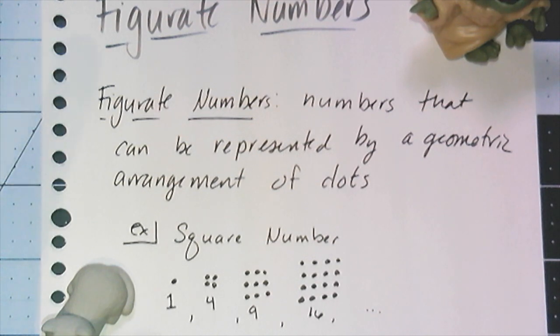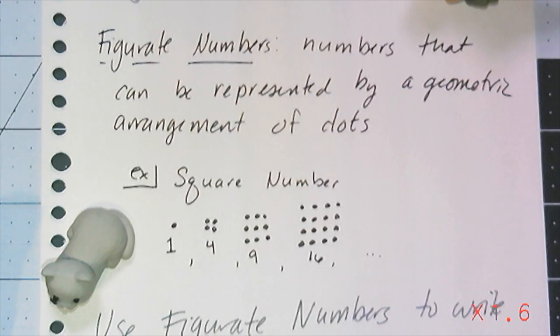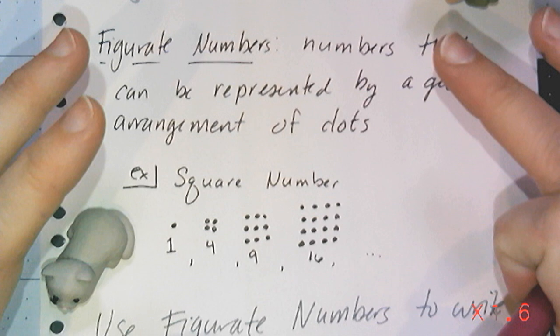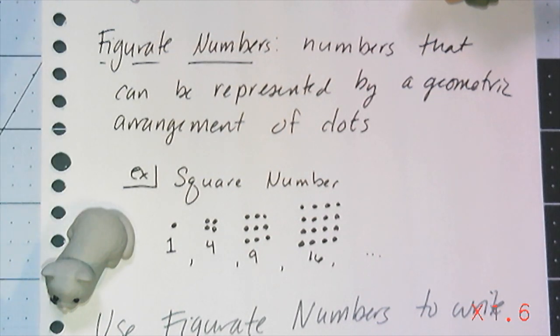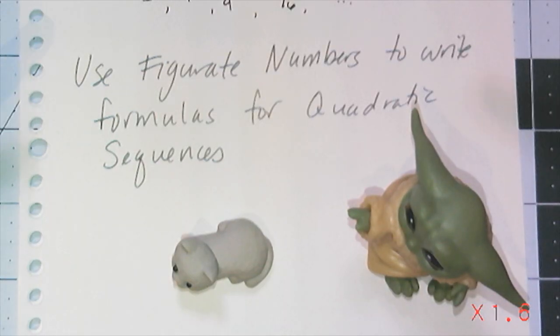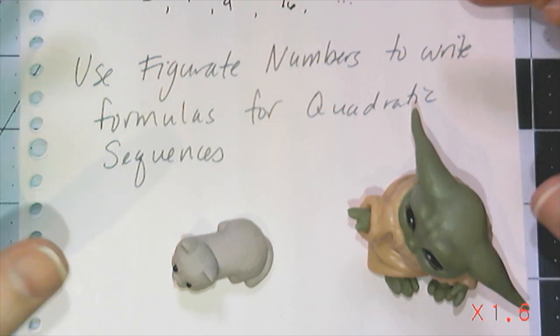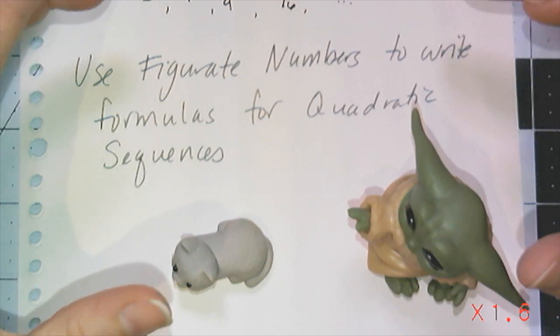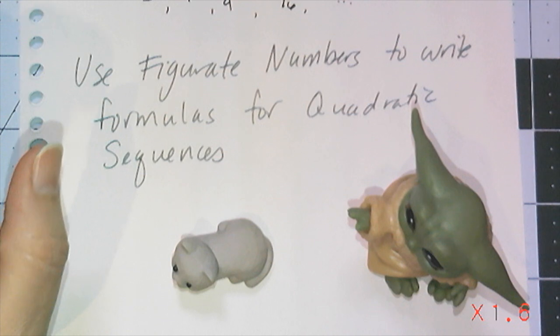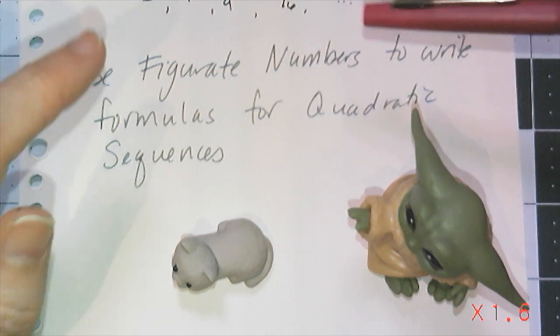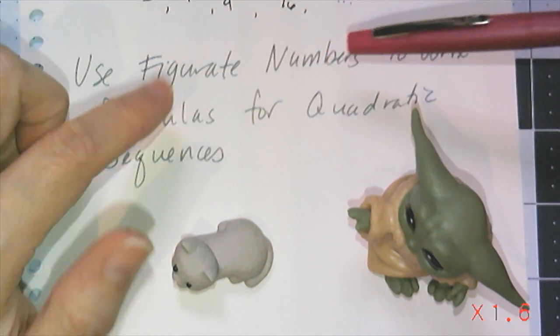The reason we're looking at this now is because we're going to use these figurate numbers and some inductive reasoning to help us do something we couldn't do in Algebra 1. Specifically, we're going to use figurate numbers to write formulas for quadratic sequences. Now I do have to give a little asterisk here because the method I'm about to show you does not work for all quadratic sequences, only a subset of them, and specifically the subset that can be factored.